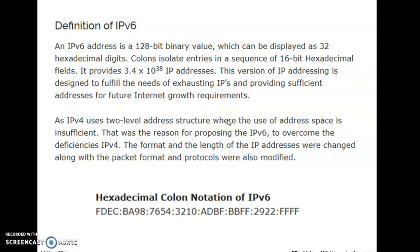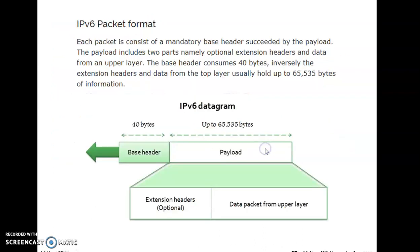The over-increasing need for IP addresses would be solved by IPv6. IPv4 uses a two-level address structure where the use of address space is insufficient. That was the reason for proposing IPv6 to overcome the deficiency of IPv4. The format and length of IP addresses were changed, along with the packet format and protocols. The IPv6 datagram or packet format comprises a header and data, also called payload.